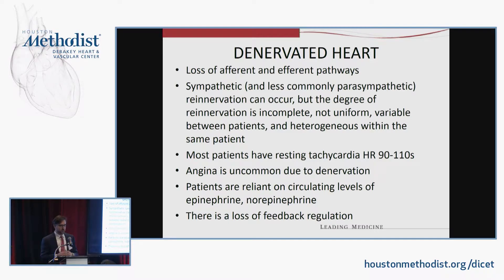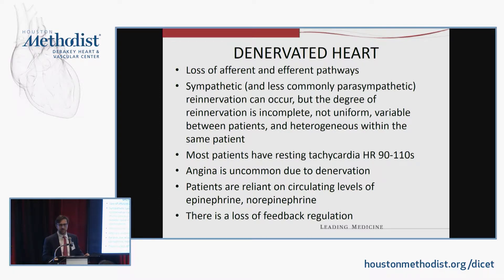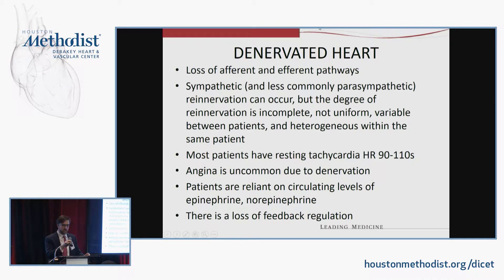You also have to understand that the transplanted heart is denervated. The vagus nerve is severed during transplant, so you lose efferent and afferent pathways. Sympathetic and, to a lesser extent, parasympathetic re-innervation can occur to some degree, but that varies from patient to patient. Most patients will have a resting tachycardia — typically in the 90s to 110s — which is why our pacemaker threshold is higher than the standard 50-60 BPM; it's typically at least in the 70s.